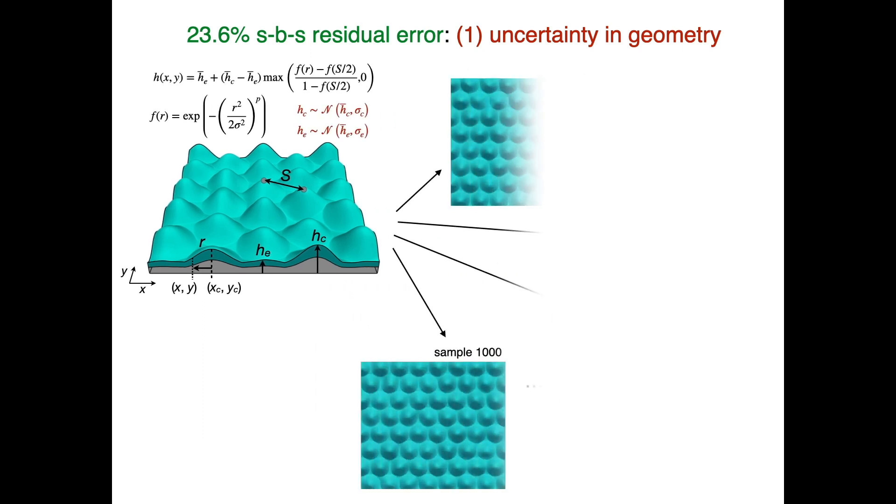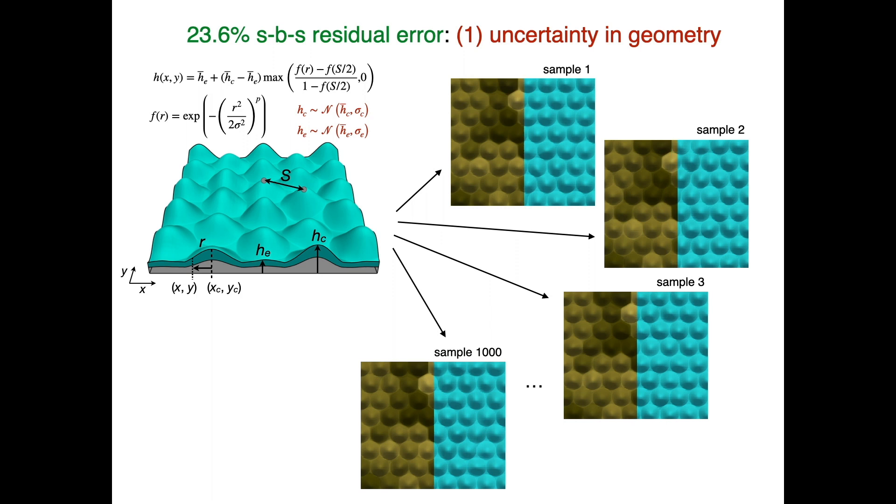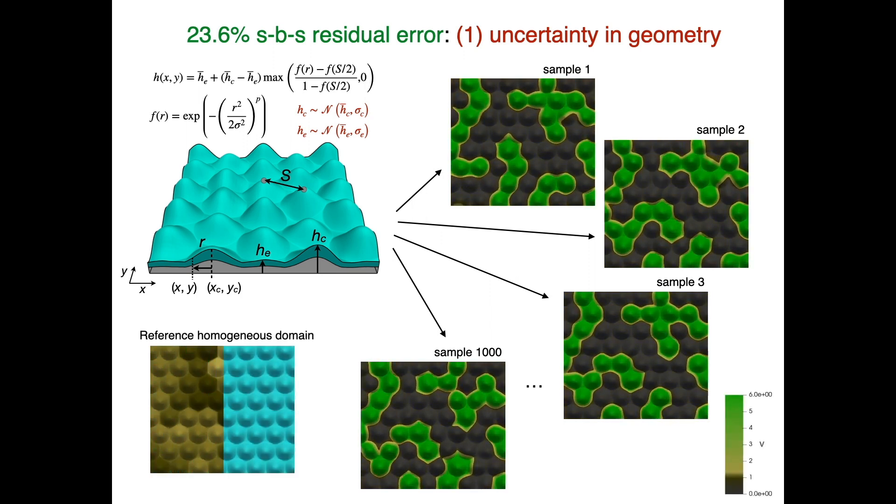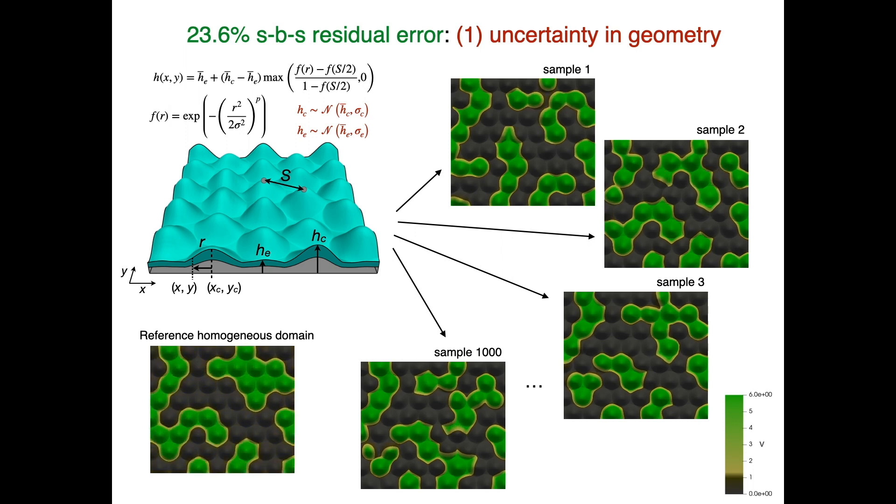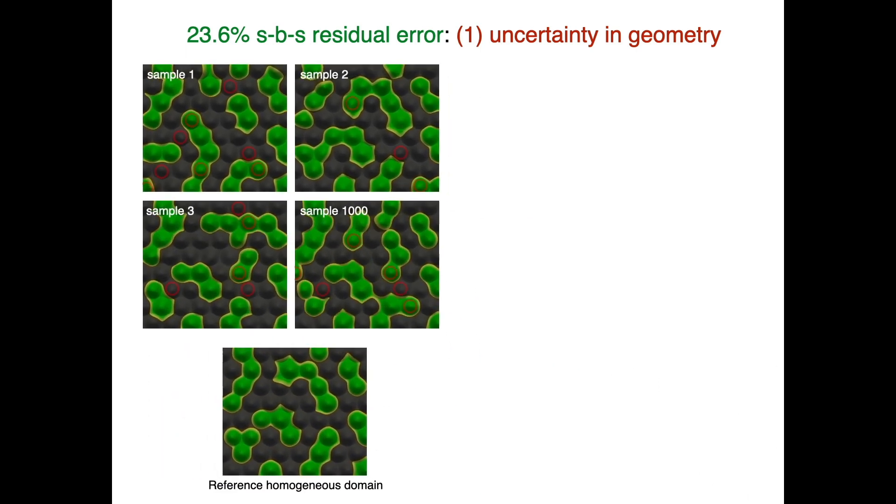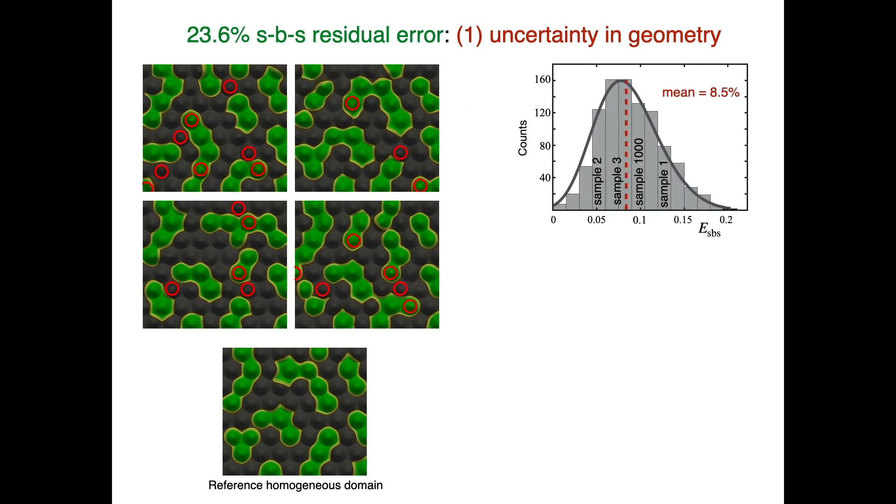For each domain, we run a 3D reaction diffusion simulation and compare the resulting pattern to the one obtained with a reference domain of identical bumps. The simulations show that given uncertainty in skin geometry, a model with perfect intrinsic predictability would still generate, on average, an error of 8.5%.